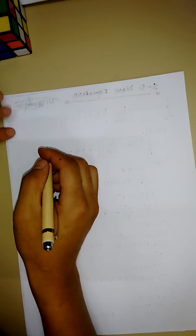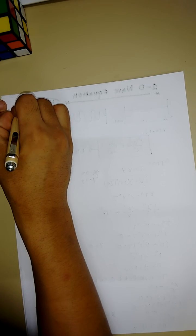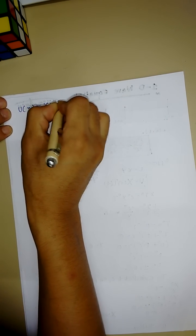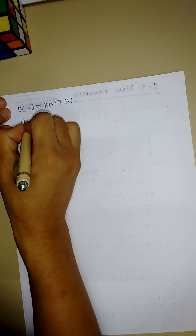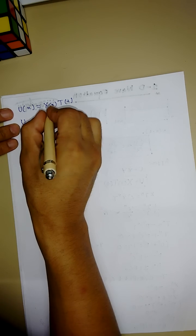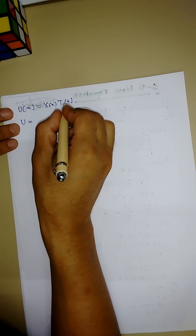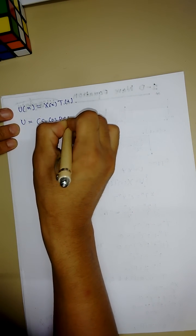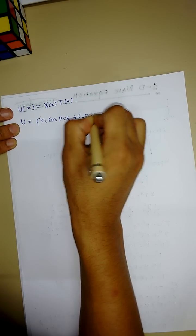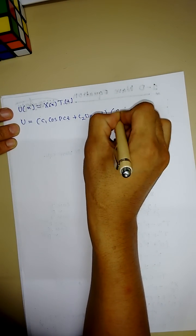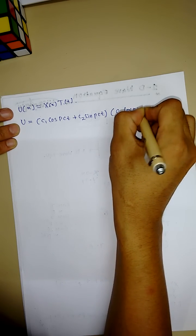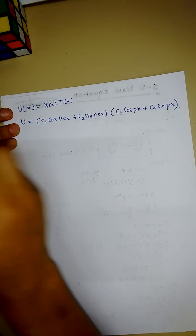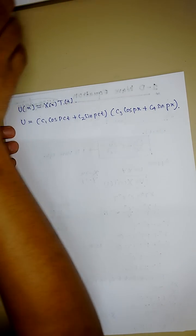Since u(x,t) = X(x)·T(t), we substitute both solutions to get: u(x,t) = [c₁ cos(pct) + c₂ sin(pct)] · [c₃ cos(px) + c₄ sin(px)].